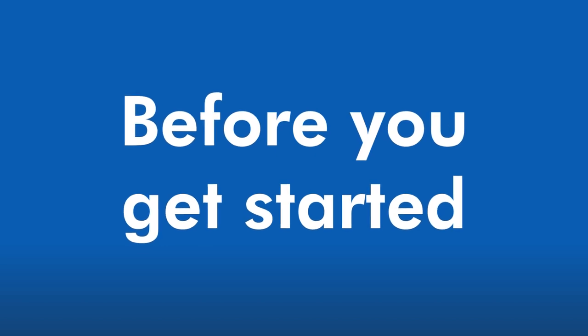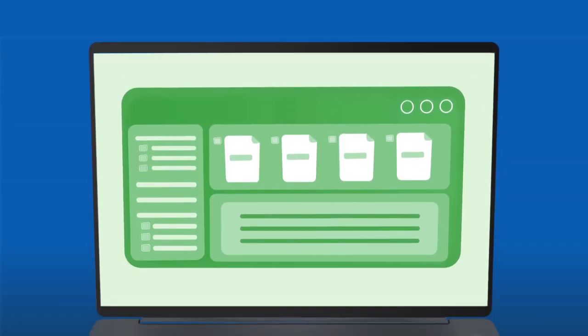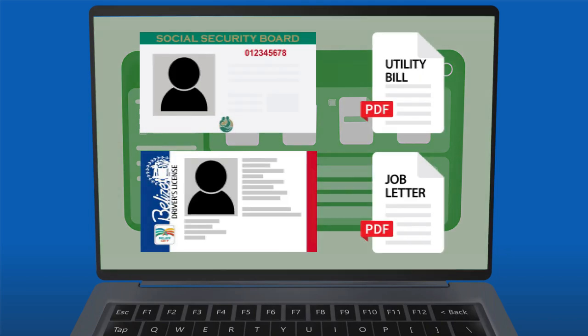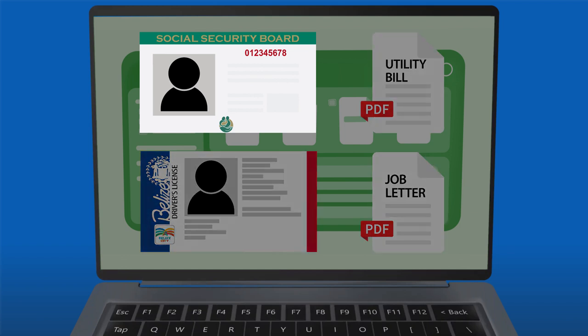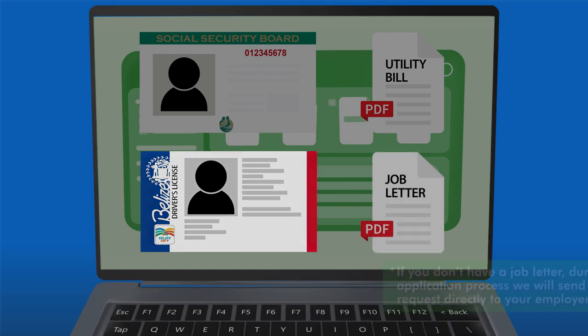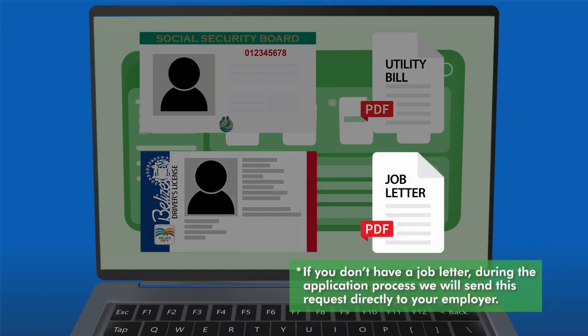Before you get started, be sure to save on your computer the documents you will need to upload as part of the application process. Just scan or take a picture of supporting documents such as your social security card, a utility bill in your name or driver's license with your home address, and a job letter from within the last six months in PDF format.